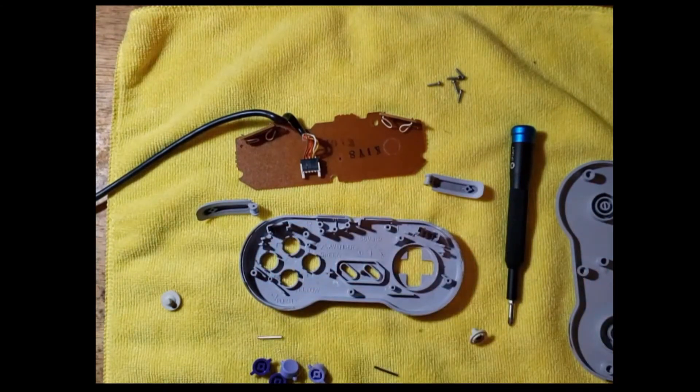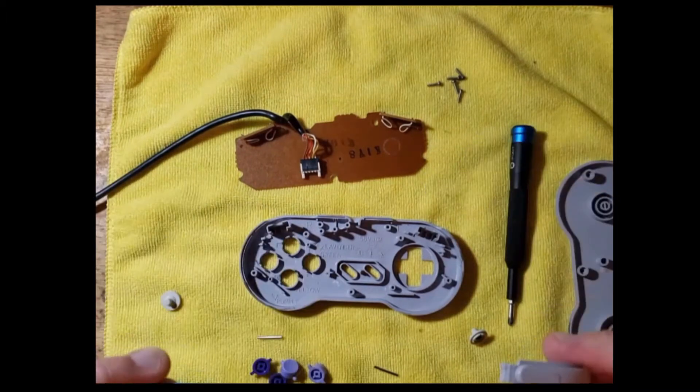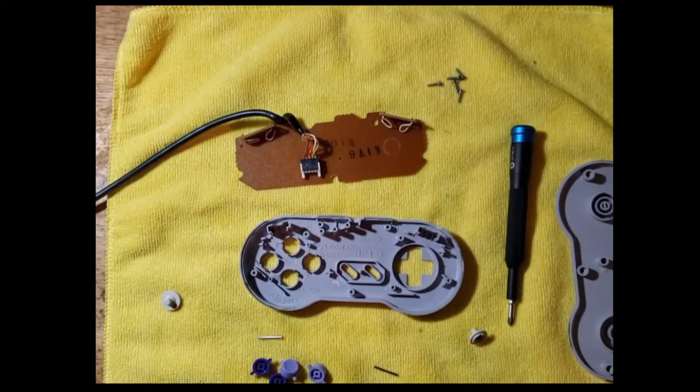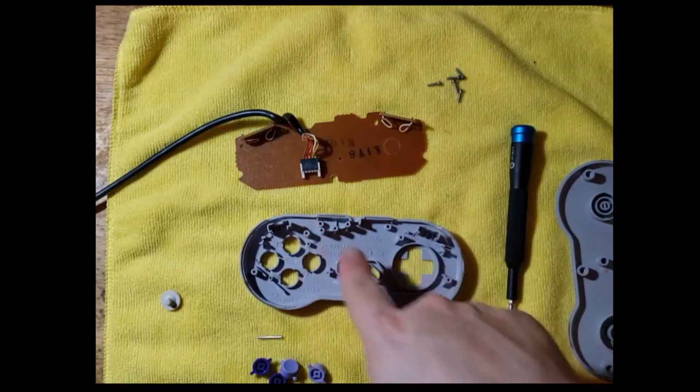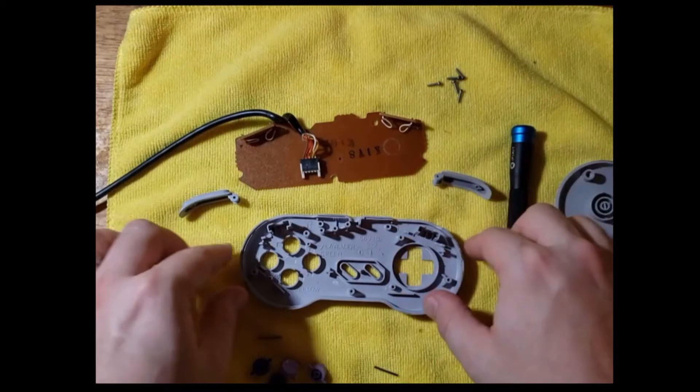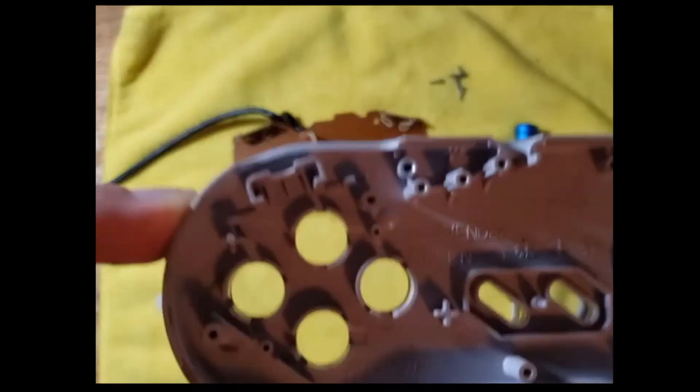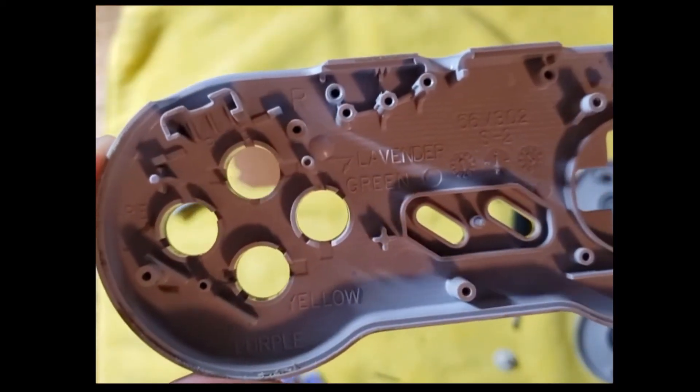Now, one neat thing here is that you have a right and a left, and they're labeled. But don't forget when you're putting them back on that it's a mirror image. So this is the right, this is the left. It's actually labeled on, if you look a little closer, it's labeled in here.